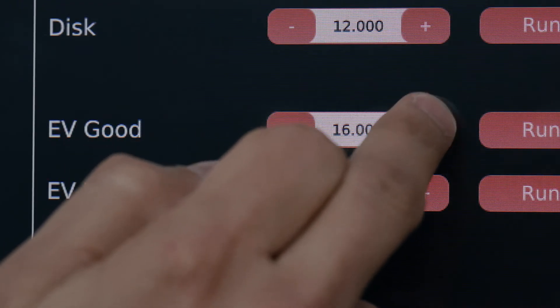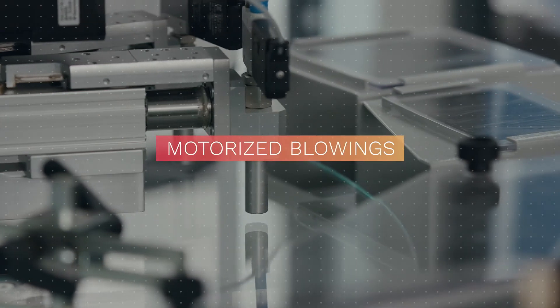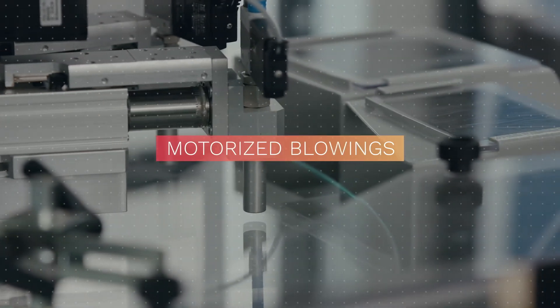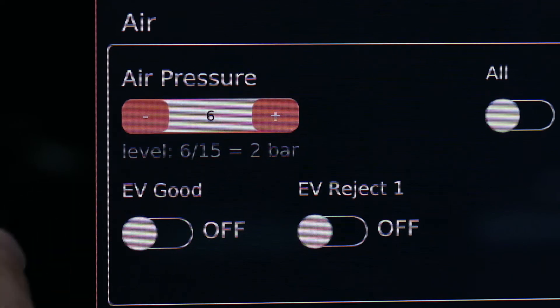Using a motorized millimetric positioning system and an airflow setting based on the size and weight of the article, it allows automatic configuration of the blowing units.